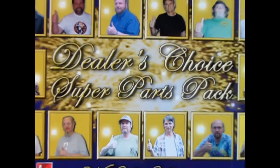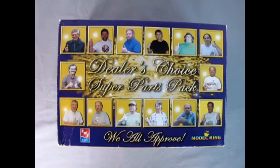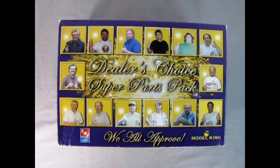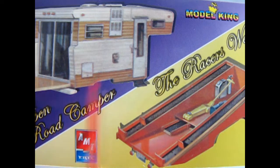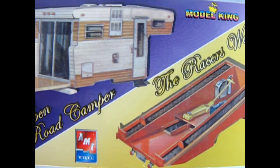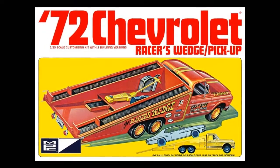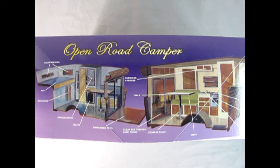Now today we're taking a little bit of a departure in our 1970s model kit tour with this really interesting Model King's Dealer's Choice Super Parts Pack. This image actually reminds me of the Brady Bunch opening scene. According to the end of the box we actually have the Open Road Camper, which was another great 70s add-on kit, and the Racer's Wedge. Recently AMT has released the Racer's Wedge, however this model kit from Model King came out by RC2 in 2004.